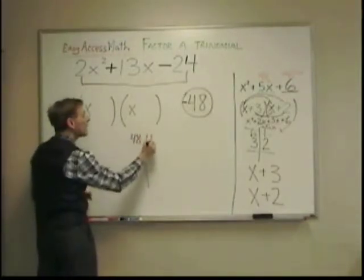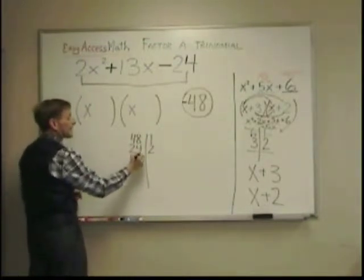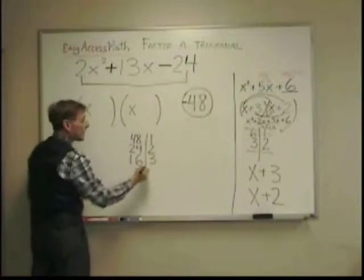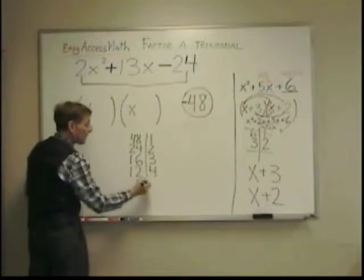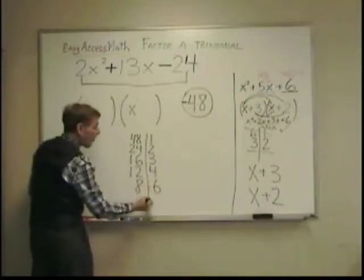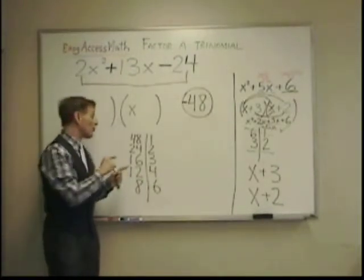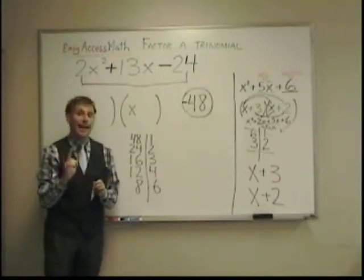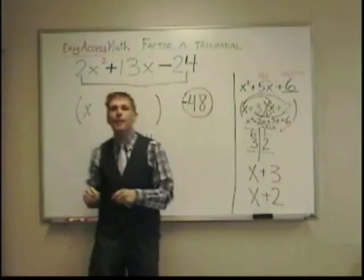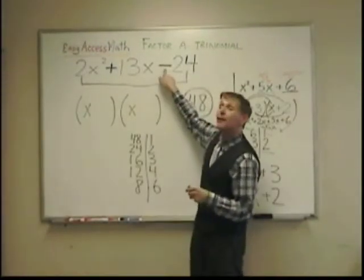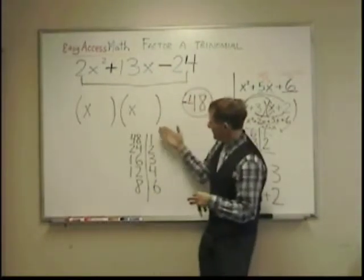So let's think of multiples of 48. Well, we could have 48 and 1. We could have 24 and 2. We could have 16 times 3. We could have 12 times 4. And we could have 8 times 6. All of these numbers, sets of numbers, pairs of numbers, they all multiply to 48. But only one of them combines to 13. And I say combines because this time that negative here tells me the signs were unlike. They're subtracting to 13. Take a look at them.